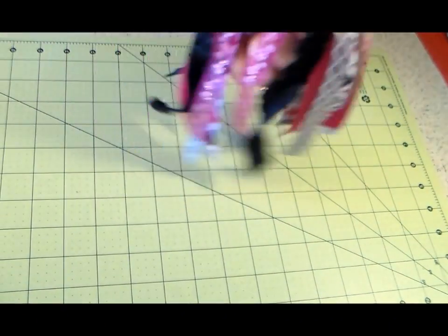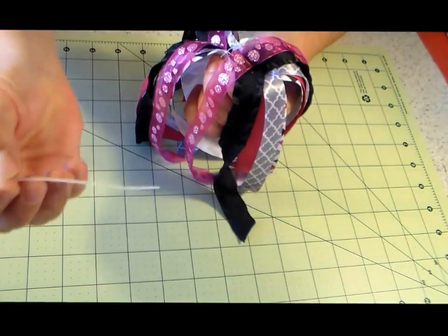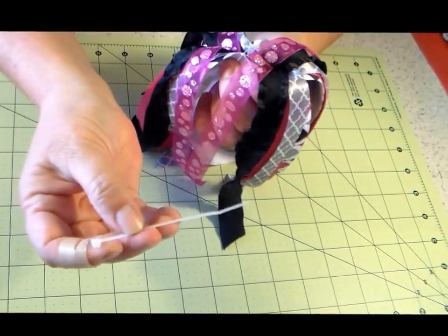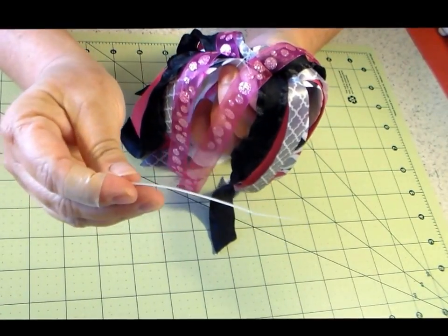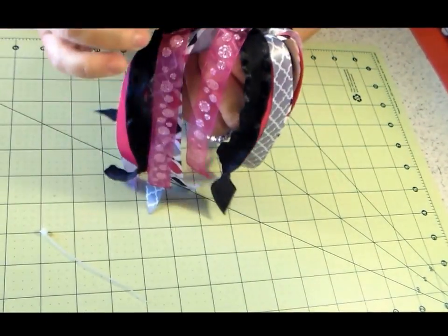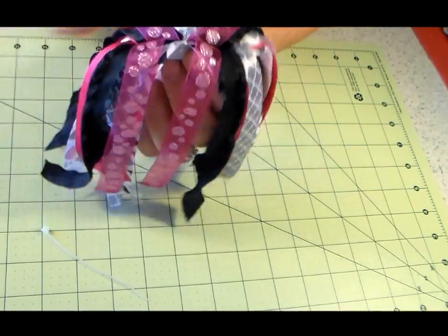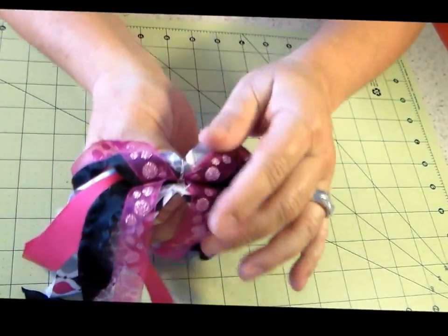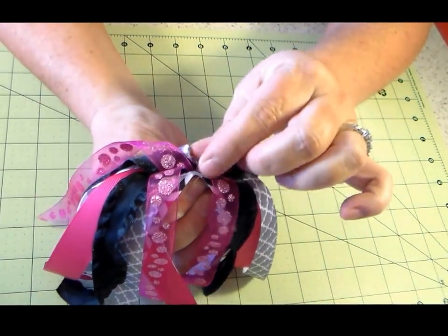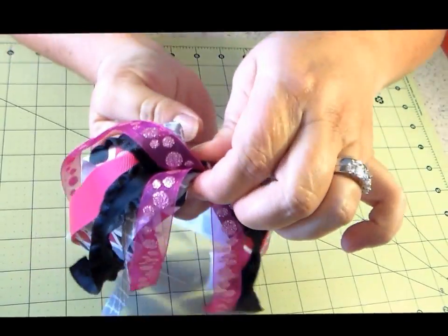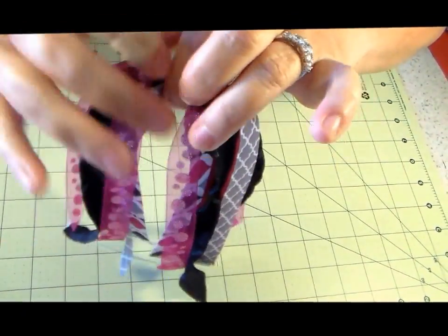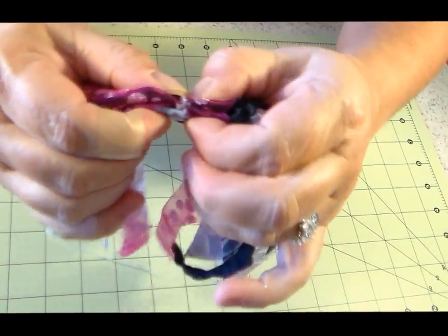So you keep it pinched until the glue pretty much dries. And then you're going to take your zip tie and then you're going to actually do this like this. So you still have it pinched and then you're just going to take this excess and pinch it back. You see that?